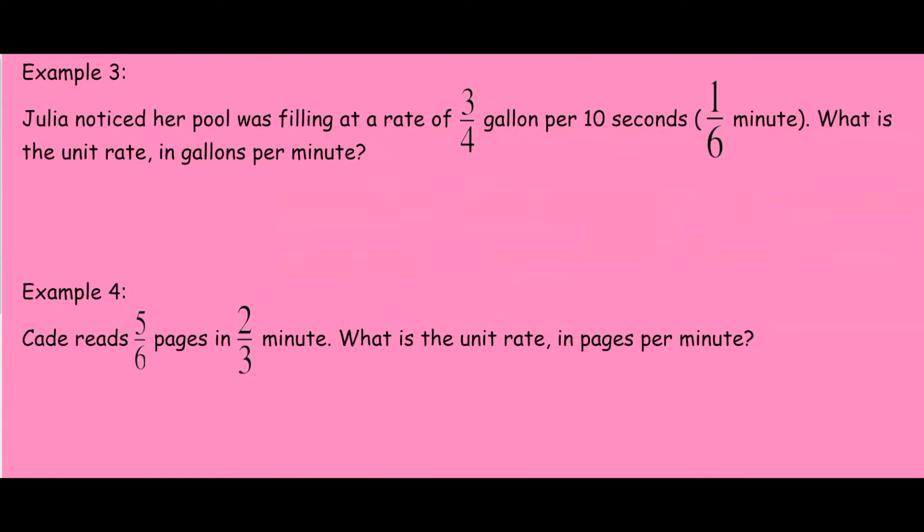Let's look at some examples where we have to find unit rate using complex fractions. Julia noticed her pool was filling at a rate of three-fourths of a gallon per ten seconds, or one-sixth of a minute. What is the unit rate in gallons per minute?